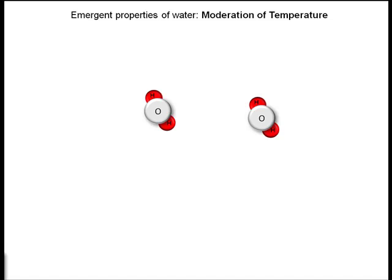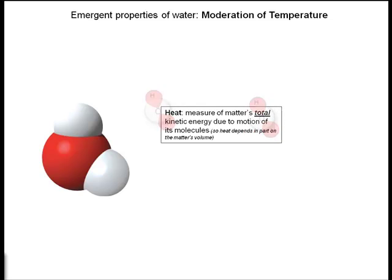Now heat and temperature are related to the kinetic energy of these molecules. Heat is the measure of matter's total kinetic energy due to the motion of its molecules. What this means is that you add up all of the kinetic energy from all the molecules in a body of water, and that gives you the amount of heat in that body of water. So heat depends on your volume.